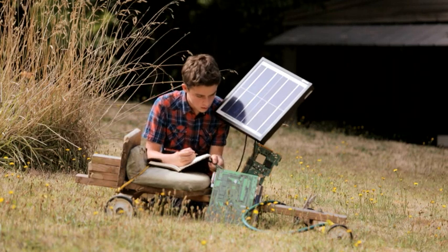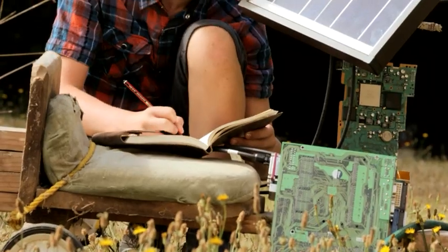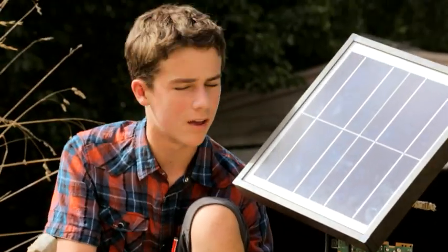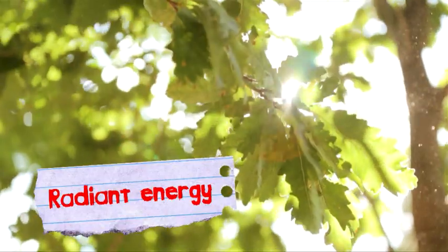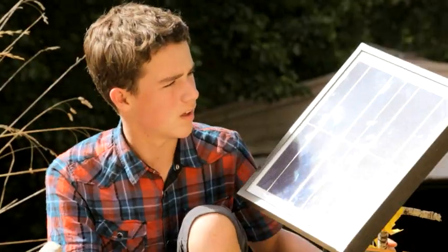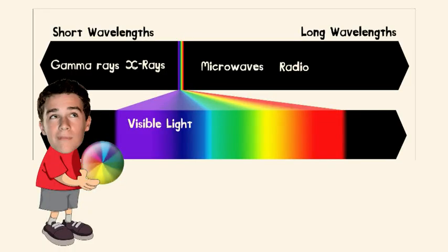Radiant energy is another type of kinetic energy because it involves the movement or travelling of electromagnetic energy. There are different types of radiant energy, such as visible light, x-rays, gamma rays, and radio waves.